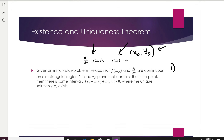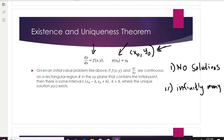The first scenario — the worst case — is that there are no solutions that go through this point. There could be solutions through a different point, but not through this one. Or it could be the case that there are infinitely many solutions through this point. Or the third case — the best case — is that there exists one unique solution that goes through the given point.